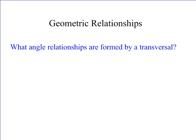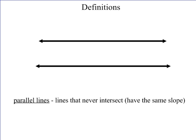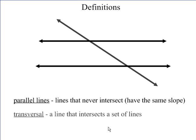Geometric relationships. What angle relationships are formed by a transversal? That's what we're going to answer in this quick video. First, we have parallel lines, and parallel lines are lines that never intersect — they have the exact same slope. We're going to draw another line across those lines and call that line a transversal. The word transverse means to cut across, and a transversal is a line that intersects a set of lines.